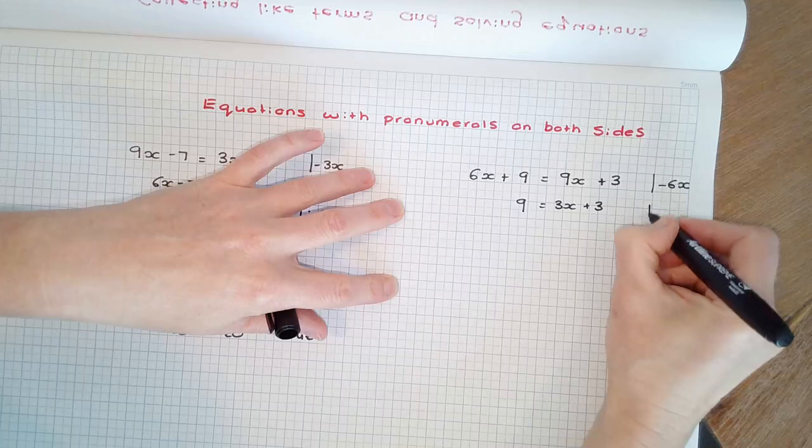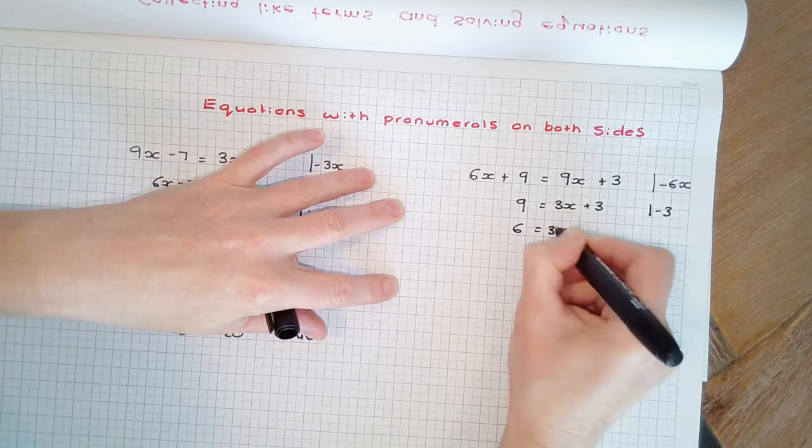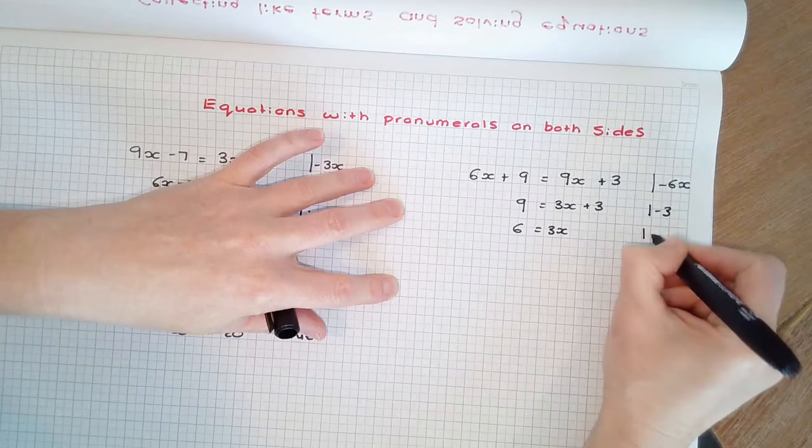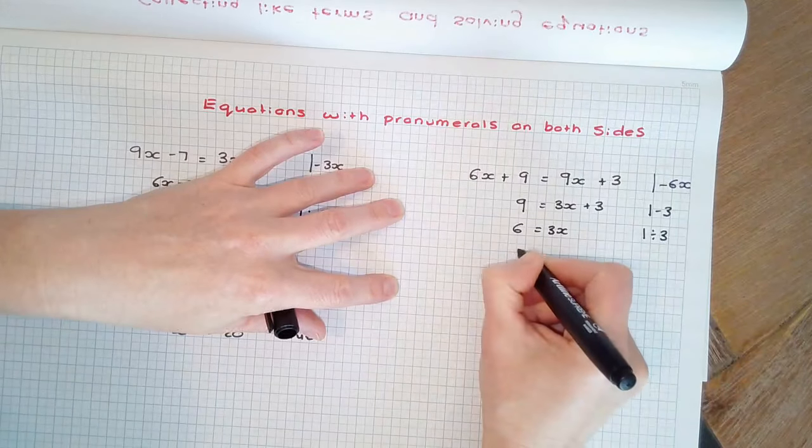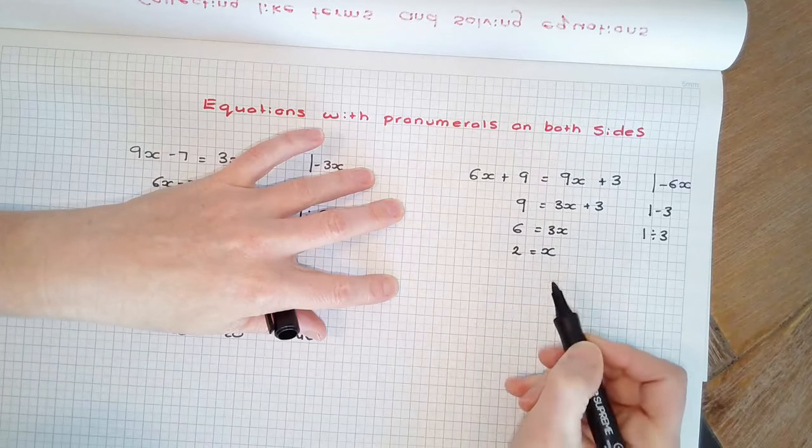The inverse of adding 3 is taking away 3 from each side. And the inverse of multiplying by 3 is dividing by 3 each side. Here we have 2 equals x.